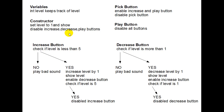What happens in the program? The user hits the pick button. Here I have the pick button is pressed event. When the pick button is pressed, write out what's going to happen in the proper order: I enable the increase and the play button and I disable the pick button. When the play button is pressed, I disable all buttons — that's all that happens when I hit the play button.